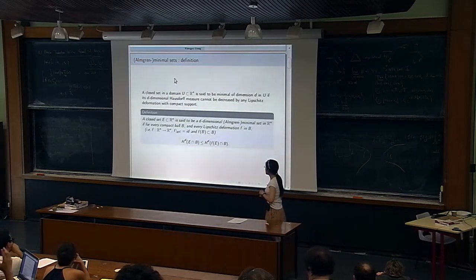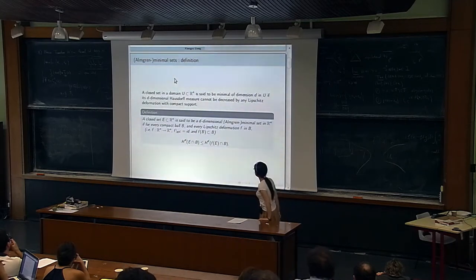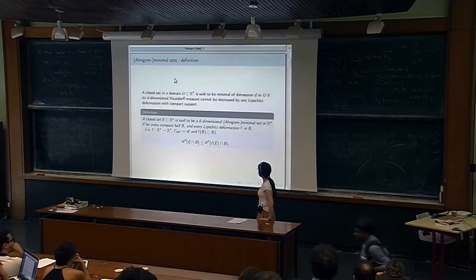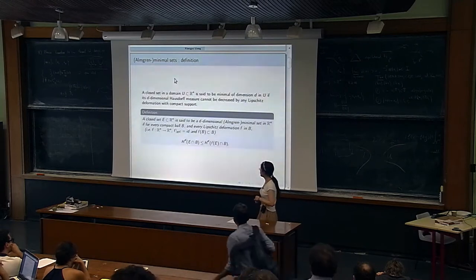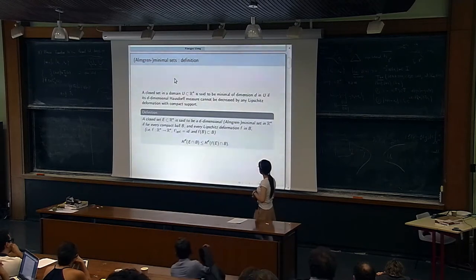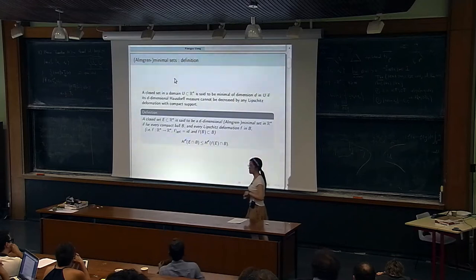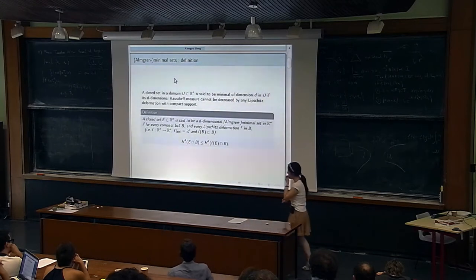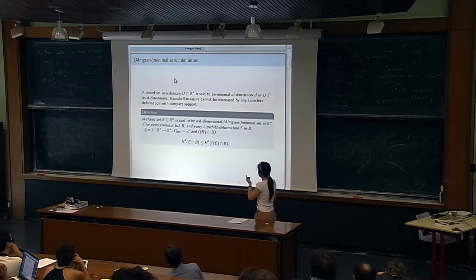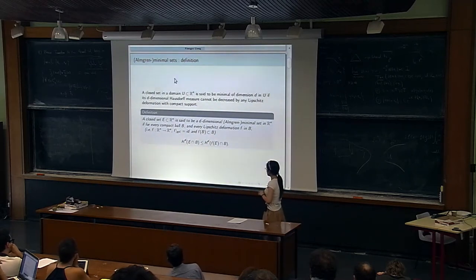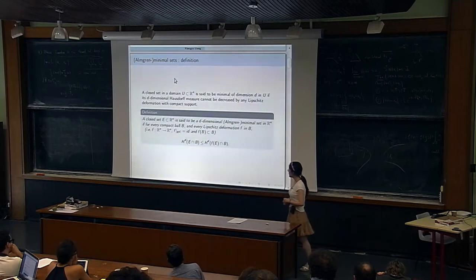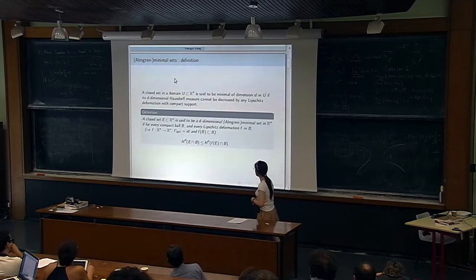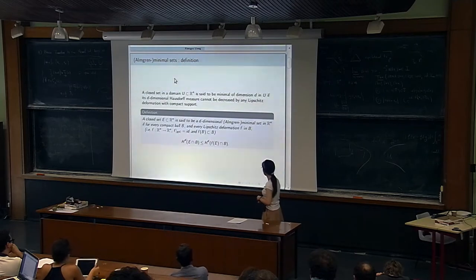Briefly speaking, a closed set in a domain U in R^n is said to be d-dimensional minimal in U if its d-dimensional Hausdorff measure cannot be decreased by any Lipschitz deformation with compact support. Here we take the simple case where U equals R^n. A closed set E in R^n is said to be a d-dimensional Almgren minimal set in R^n if...